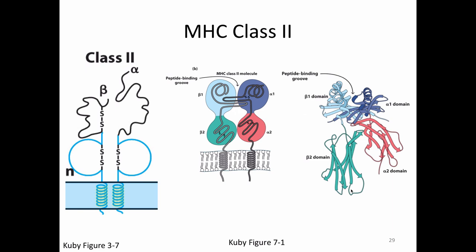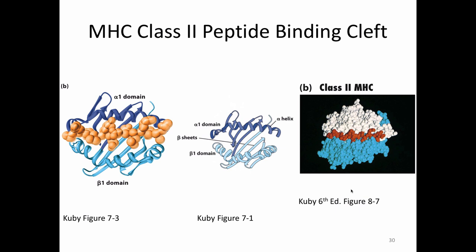Looking at the MHC class 2 binding cleft from above, you can see it's made of the alpha 1 and beta 1 alpha helices. Critically, the ends are open — the peptide can go all the way to the end and isn't cut off. Sometimes the peptide in MHC class 2 hangs off the edges like a hot dog in a hot dog bun. So MHC class 2 is much less strict in terms of peptide length; we often describe class 2 epitopes as about 10 to 20 amino acids, though they can vary even outside that range.